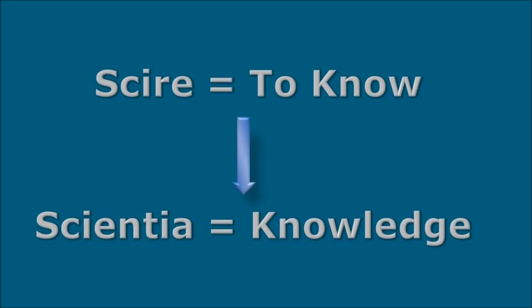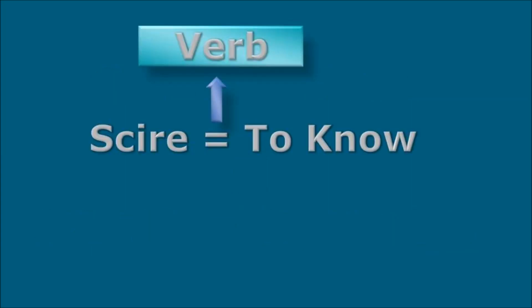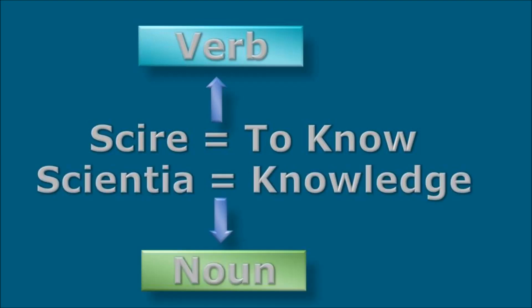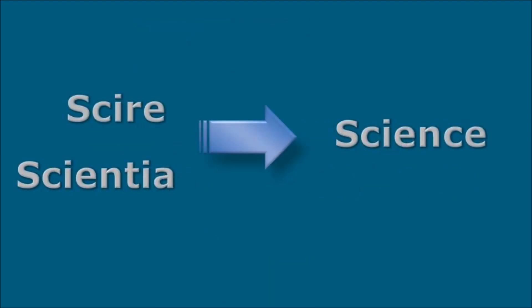The difference in these both words is that scire is a verb and scientia is a noun. Now it is clear that the word science is derived from Latin word scientia, but the actual origin is another Latin word scire.